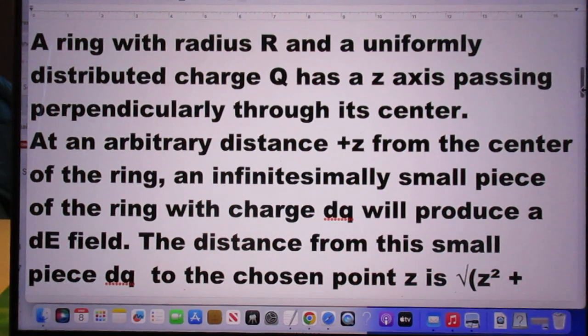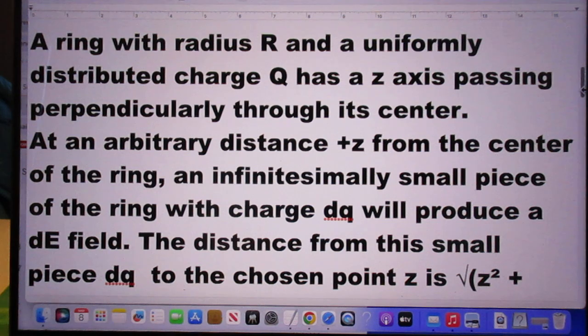So here is Eugen's solution. A ring with radius R and a uniformly distributed charge Q has a Z-axis passing perpendicularly through its center.